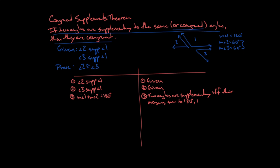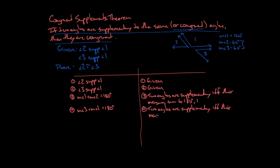I'll do the exact same thing for statement 2, since angle 3 and angle 1 are also supplementary. Statement 4: the measure of angle 3 plus the measure of angle 1 equals 180 degrees. Same reason — two angles are supplementary if and only if their measures sum to 180 degrees — from statement 2.